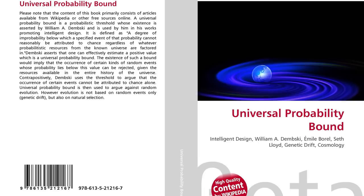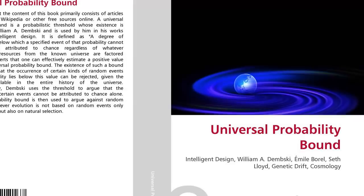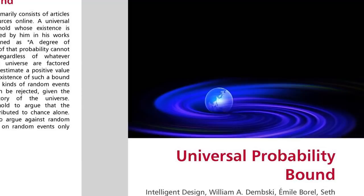For this reason, Kolmogorov complexity is determined by juxtaposing the length of the description versus the entropy it resolves. Multiplying the descriptive complexity of a system by Seth Lloyd's probability of an event gives us a number that tells us whether it is beyond the universal probability bound of 10^150.